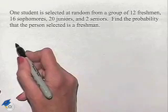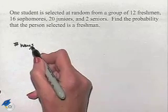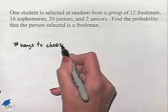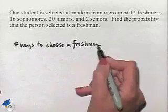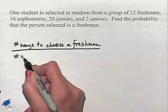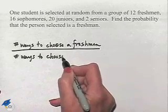We're going to use a fraction where we're going to have in the numerator the number of ways to choose a freshman since that's what we're looking for. We're going to divide that by the number of ways to choose just any student.